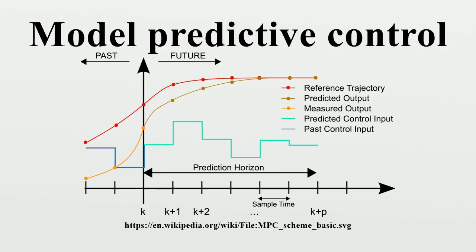As in linear MPC, NMPC requires the iterative solution of optimal control problems on a finite prediction horizon. While these problems are convex in linear MPC, in non-linear MPC they are not convex anymore.